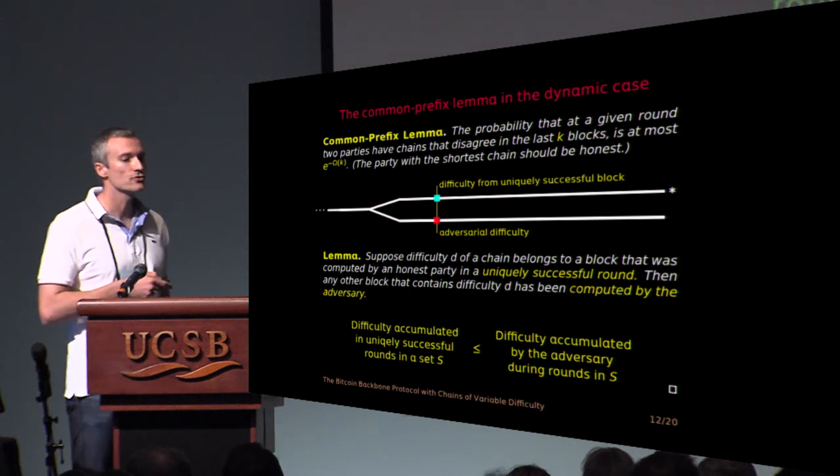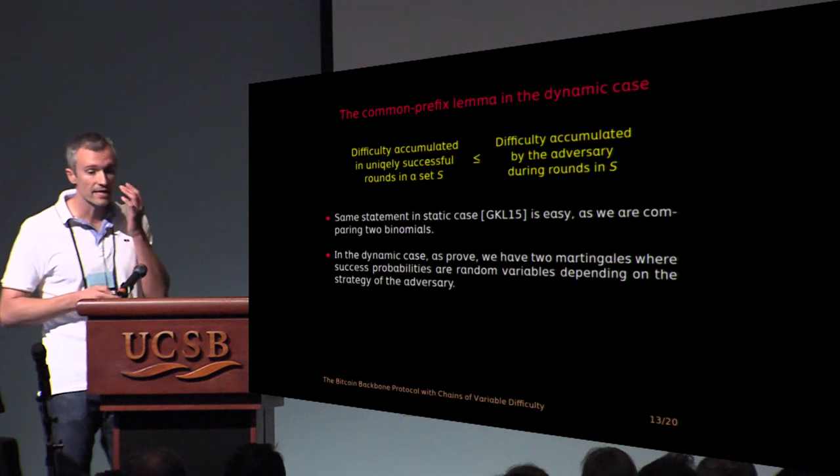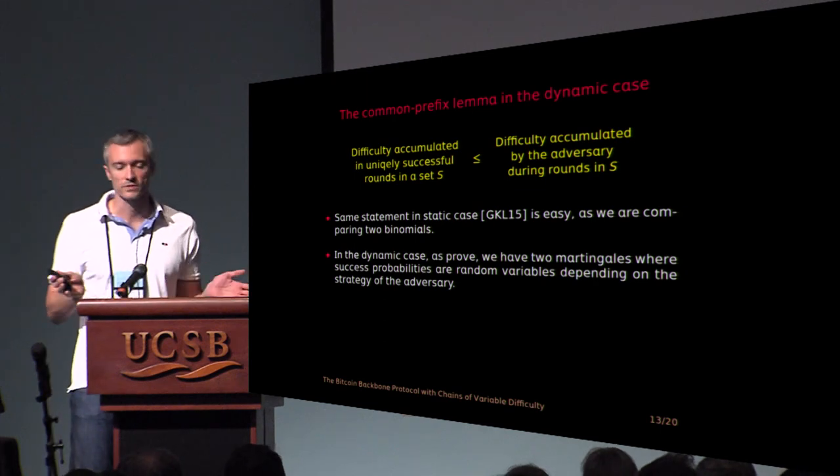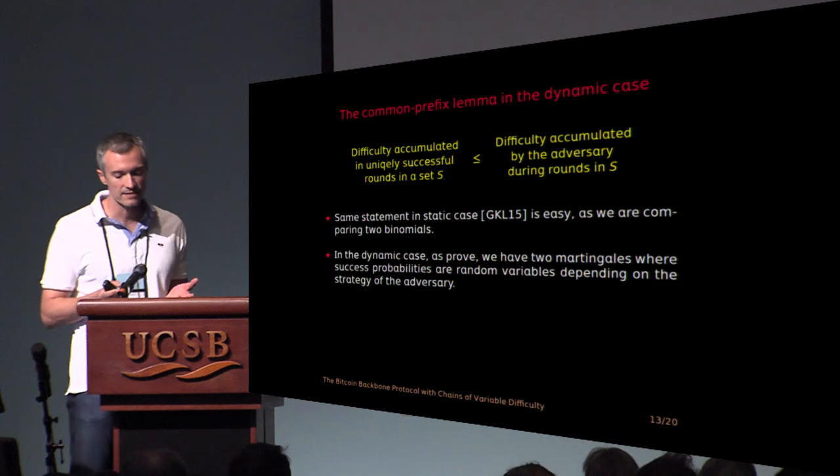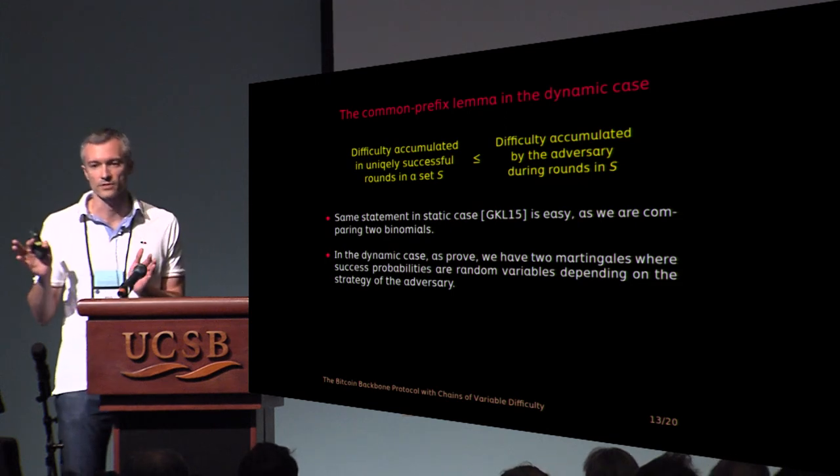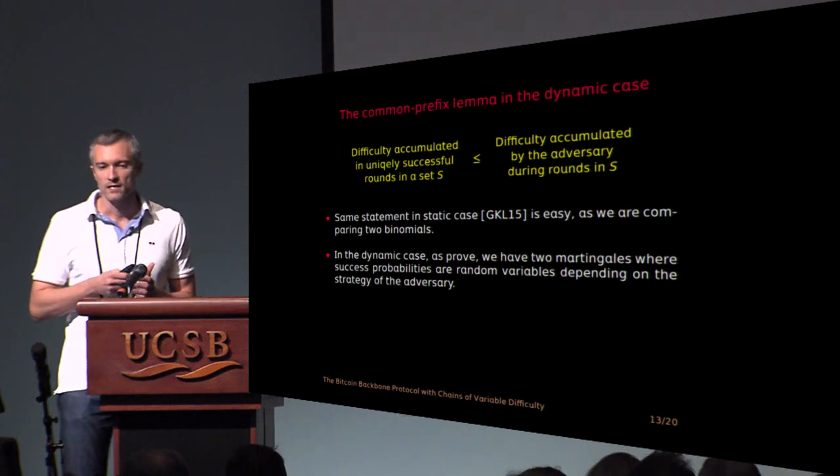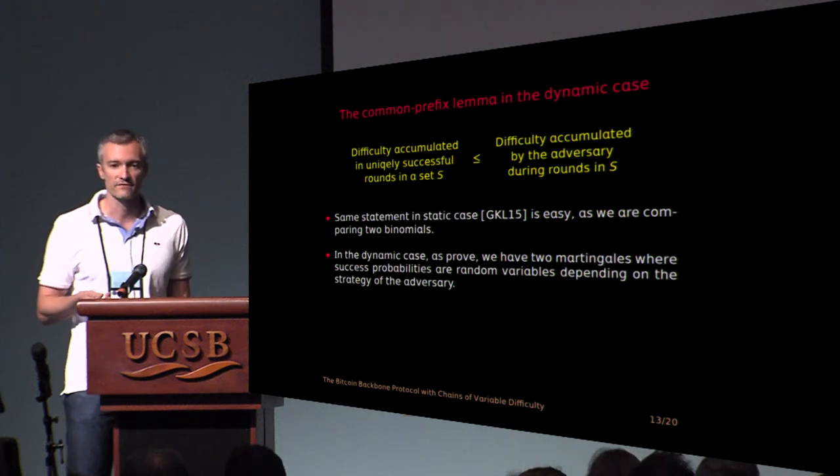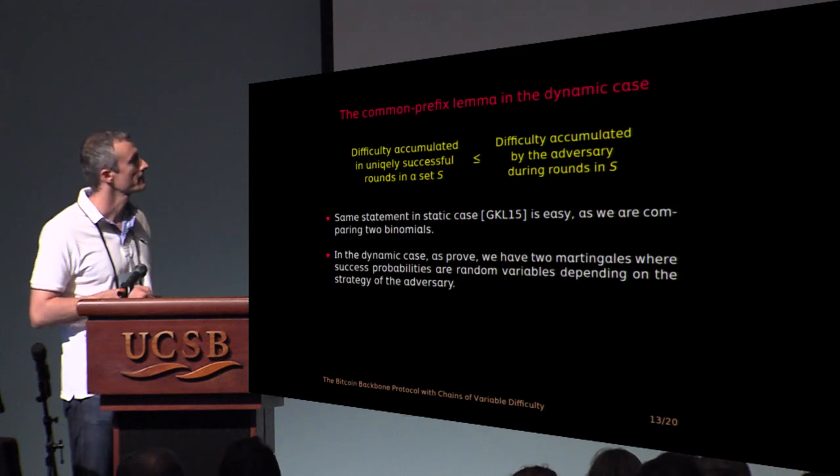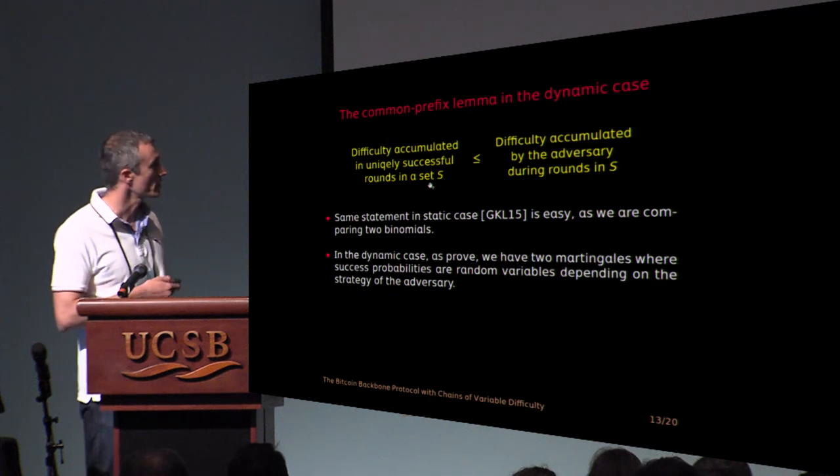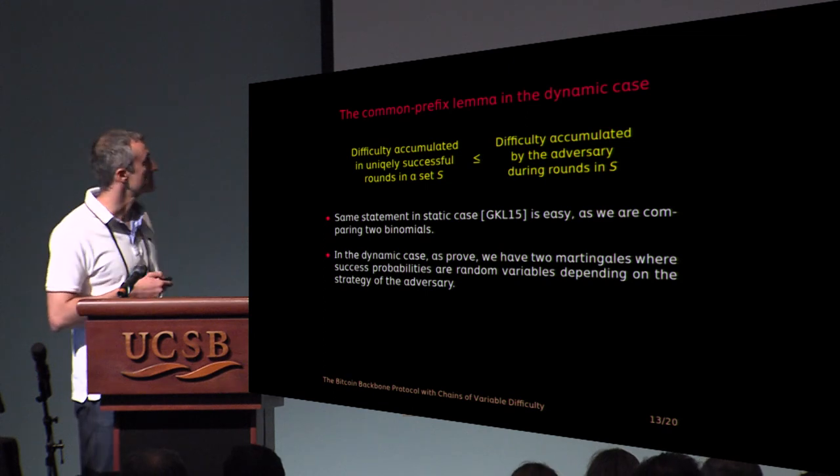But then how do you show that this is a low probability event? In the static case, this was easy. We were just comparing two binomials, so Chernoff bound would give you the low probability of this event. In the dynamic case now, you really have two martingale sequences. If you stop at any time execution, you still have those Bernoulli trials, but the probability of success depends on the actions of the adversary. It depends on the targets you have, and those depend on the strategy of the adversary. So it's not clear how to proceed. You have to prove the target calculation works. It keeps the probability of success above constant.